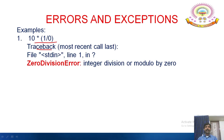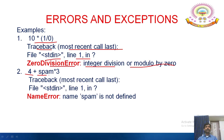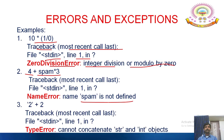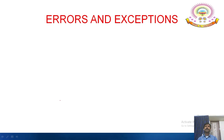For example: 10 * (1/0) gives a traceback — most recent call last — ZeroDivisionError: integer division or modulo by zero. Similarly, 4 + spam gives a NameError because spam is not a defined variable. And '2' + 2 gives a TypeError because you cannot concatenate a string with an integer. These are the typical common errors that we find.